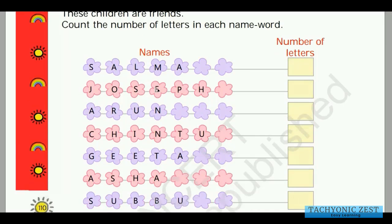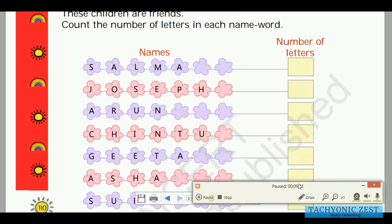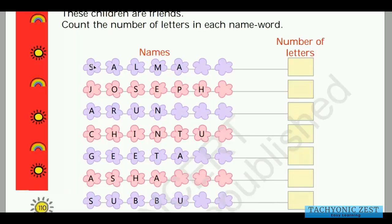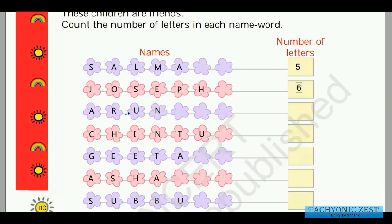Now let us see the next portion. Here it says these children are friends — count the number of letters in each name. So we have to count the total number of letters in each name. The first name is Salma — S, A, L, M, A — that is one, two, three, four, five: 5 letters. The next name is Joseph — one, two, three, four, five, six: 6 letters. The next name is Arun — A, R, U, N — one, two, three, four: 4 letters.